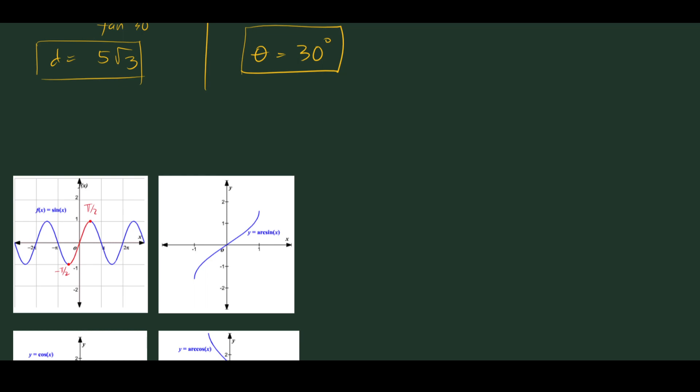The inverse is shown on the right side of the graph. This is y equals arc sine of x. You can write it as arc sine or as y equals sine inverse of x.